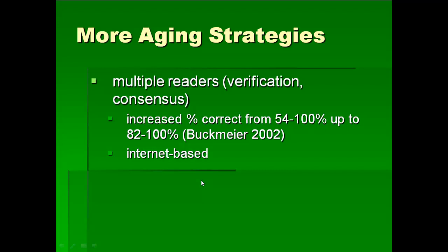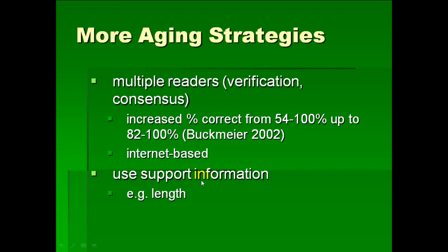You have the possibility to make this internet-based if you're just using digital images, but again, you always want to work at the microscope versus at the computer. Another thing people do to improve aging is to use support information — for example, the length. If you're trying to decide what age a fish is, some people will look at the length to help make the decision. You can see the problem: it's a circular argument. You're talking about age and growth, and then you're looking at growth to help determine age. I think this has real potential to introduce bias, so I don't like it. You're much better off ignoring supplemental information, and if you can't get a consensus on a particular otolith, just throw it out or improve your technique.